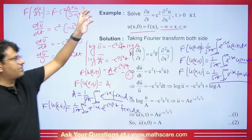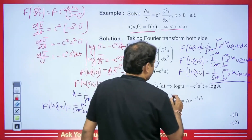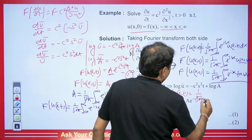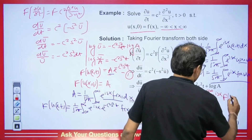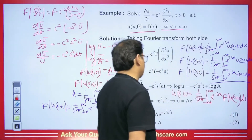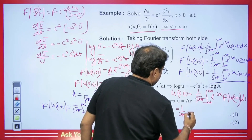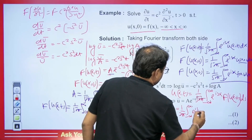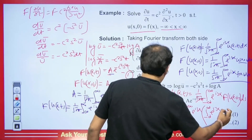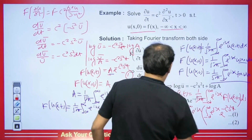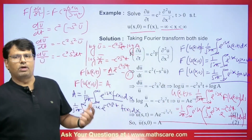Now putting this value of a into ū, the Fourier transform of u(x,t) becomes: ū(s,t) = (1/√(2π)) ∫_{−∞}^{∞} e^{isx} e^{−c²s²t} f(x) dx. But the partial differential equation is in terms of u(x,t), so the answer should also be in terms of u(x,t). We take the inverse Fourier transform: u(x,t) = (1/√(2π)) ∫_{−∞}^{∞} e^{−isx} ū(s,t) ds, which gives a double-integral solution.